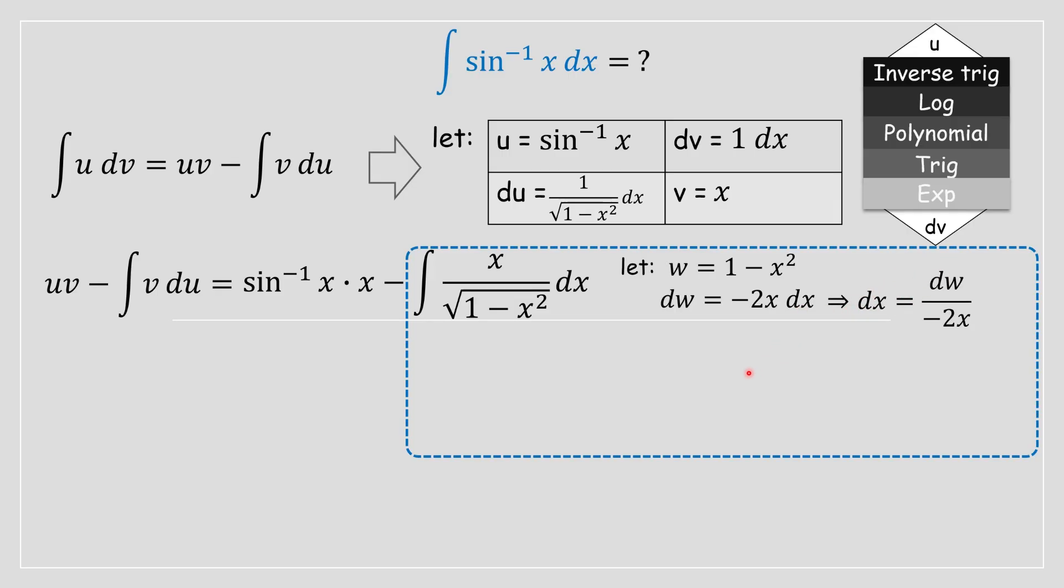We are then going to take this dx term and replace it inside this integral and we can rewrite the integral as follows on your screen. We can then isolate and simplify. Notice there's an x in the numerator and in the denominator. We're going to cancel that out and move that scalar quantity negative 1/2 outside the integral.